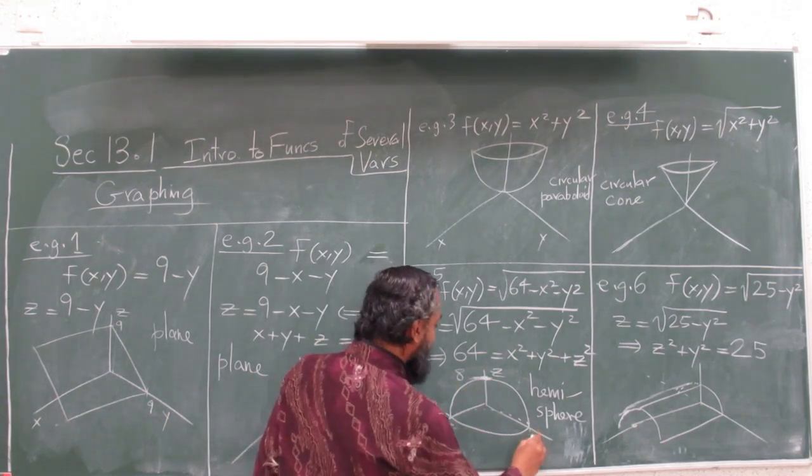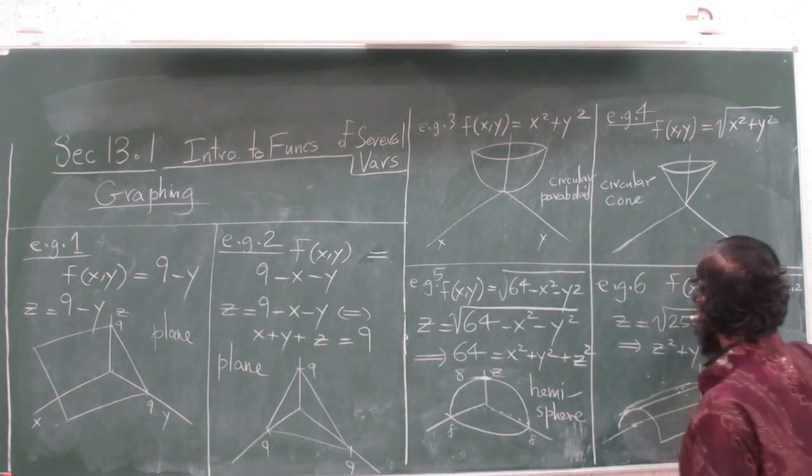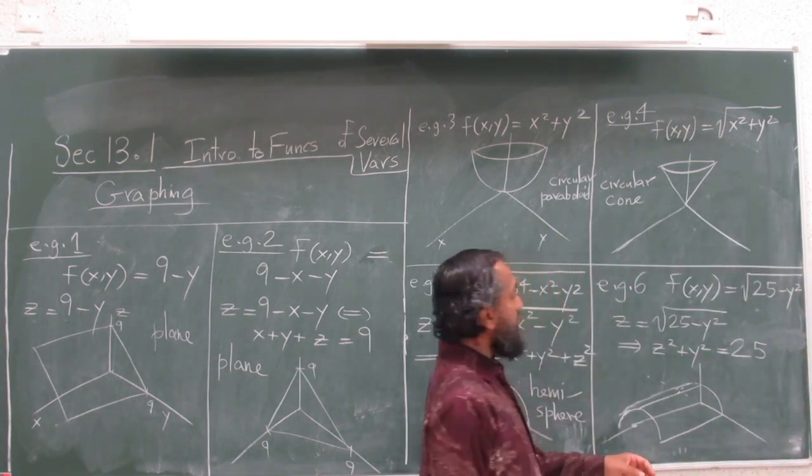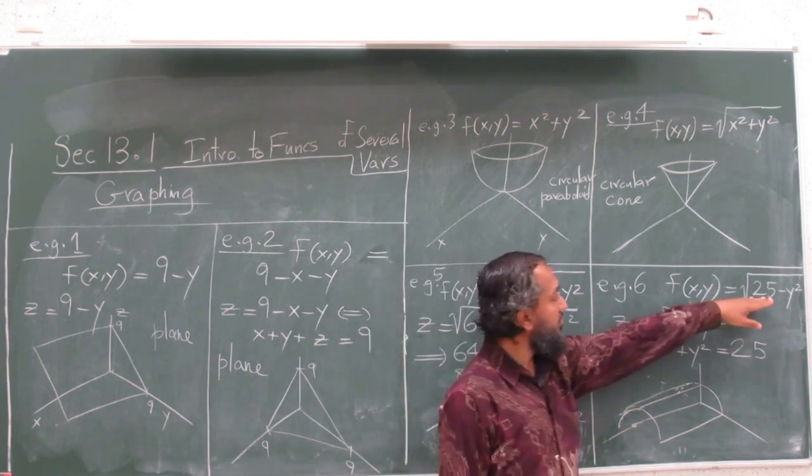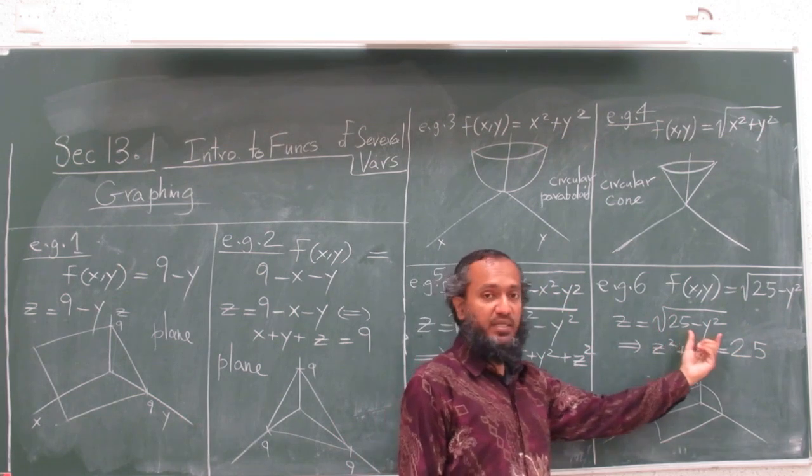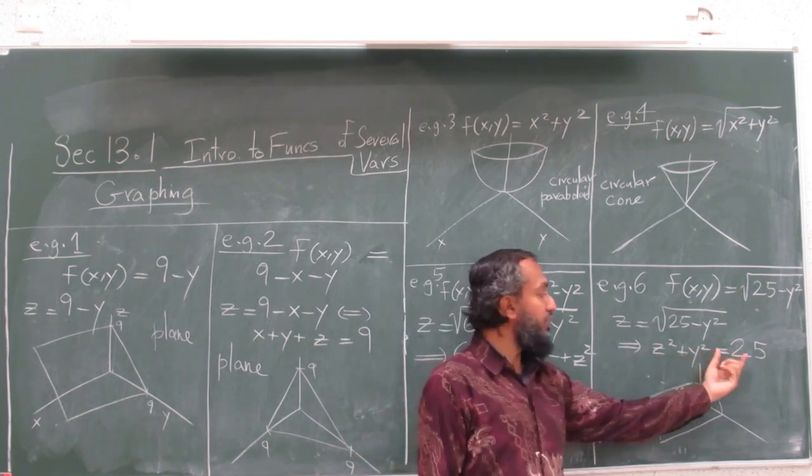And similarly, f(x,y) = √(25 - y²). I don't know if you can read that in the video, 25 minus y squared. So z = √(25 - y²). So if you rewrite it, it's y² + z² = 25, but again z has to be positive.